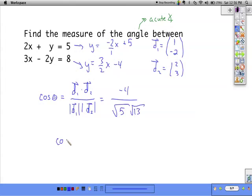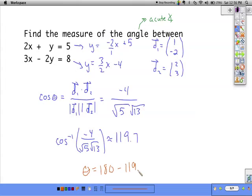When we take the inverse cosine of that, we get approximately 119.7. But again, we're going to go with the acute measure. So, we're going to say that theta is 180 minus 119.7, which is approximately 60.3 degrees.